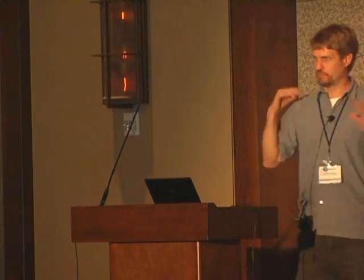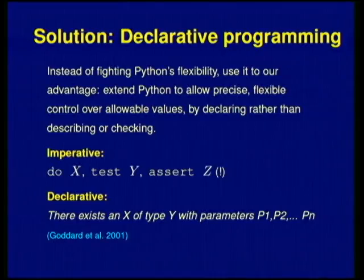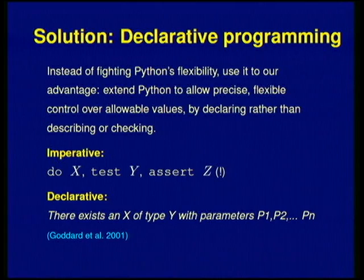Instead, don't think about a data flow or telling the code to do something in a particular spot. Just think: for this argument, I need an object of type Y with these parameters. You can constrain the values of these parameters in ways that don't involve telling the code what to do.